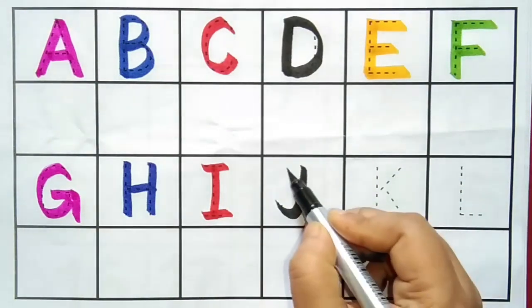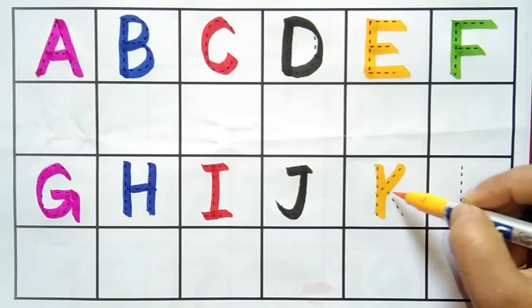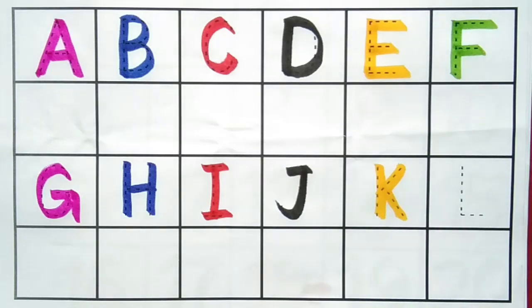J. J for Joker. J for Joker. K. K for Kite. K for Kite.